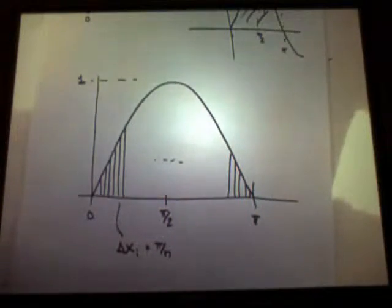So if we form a Cauchy sum, since this is in the Cauchy integral chapter, what would a Cauchy sum look like? So let me take the left endpoint.